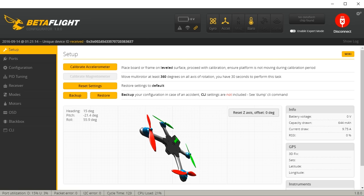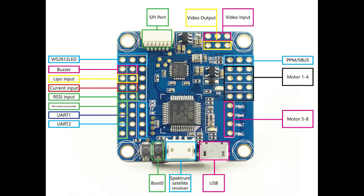Nathan is a really stand-up guy, because a few weeks later I get in the mail an Omnibus F3 flight controller from him. I'd say that's a pretty good trade — I got rid of a KISS and I got an Omnibus.